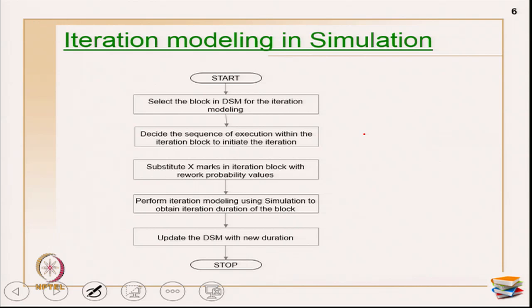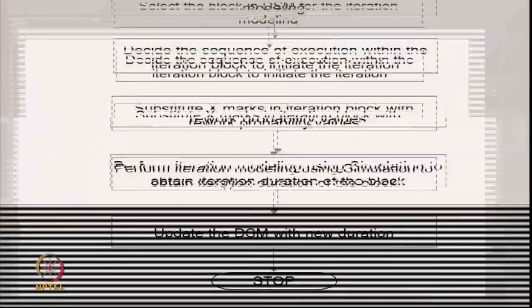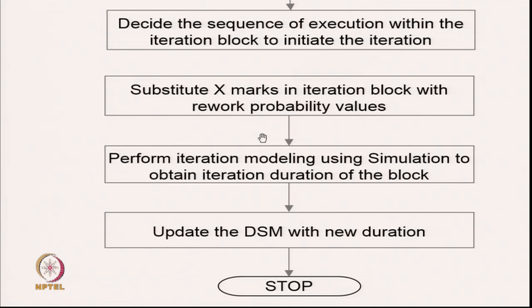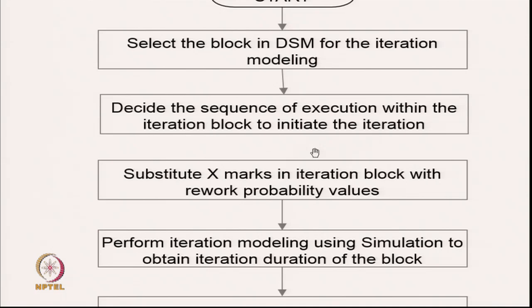Coming back to phase 4, operation number 4 - iteration modeling in simulation. Simple steps are given here for the simulation exercise. The first step is to select the block in the DSM for iteration modeling. You have to select the block in the DSM for iteration modeling. In the last example, I have only one block, so you can choose that and decide the sequence of execution within the iteration block to initiate the iteration.